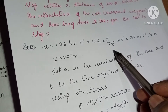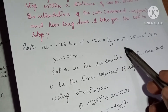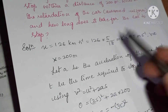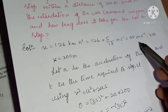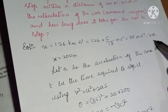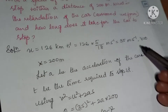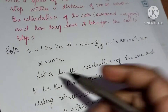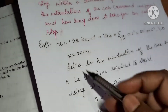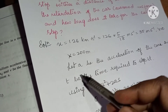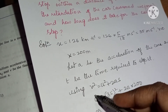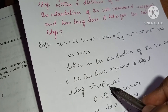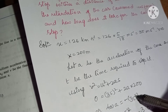The initial velocity is 126 km per hour. Converting: 126 × (5/18) = 35 meters per second. The final velocity v = 0 (car comes to stop), and the distance s = 200 meters. Let a be the acceleration and t be the time required to stop. Using the equation v² = u² + 2as.